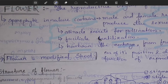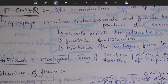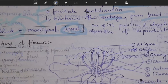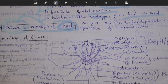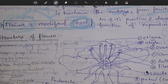The flower is a modified shoot. Because of reproduction, the flower is modified into fruit — reproduction helps in fruit formation from the modified flower.